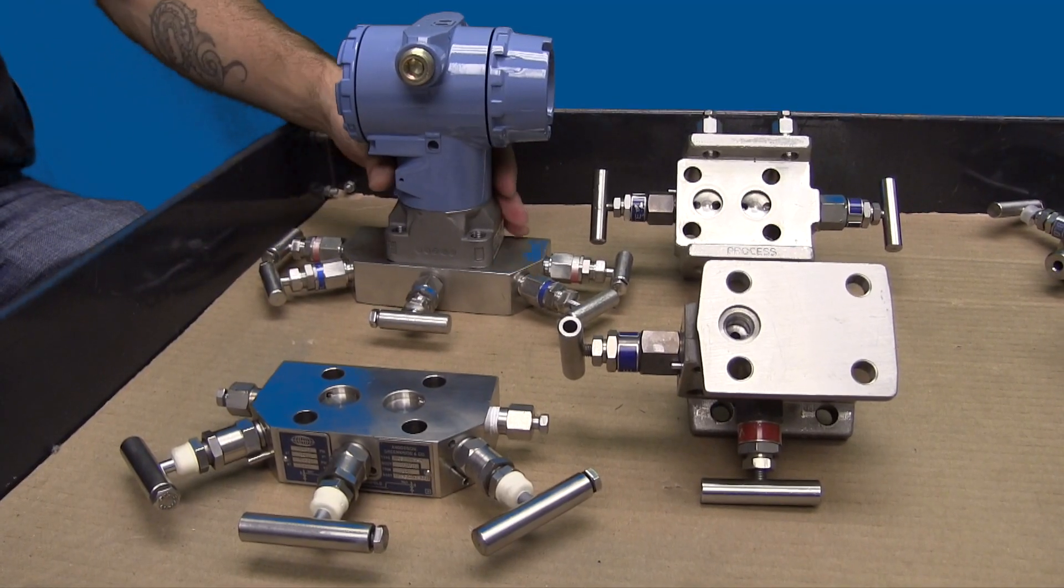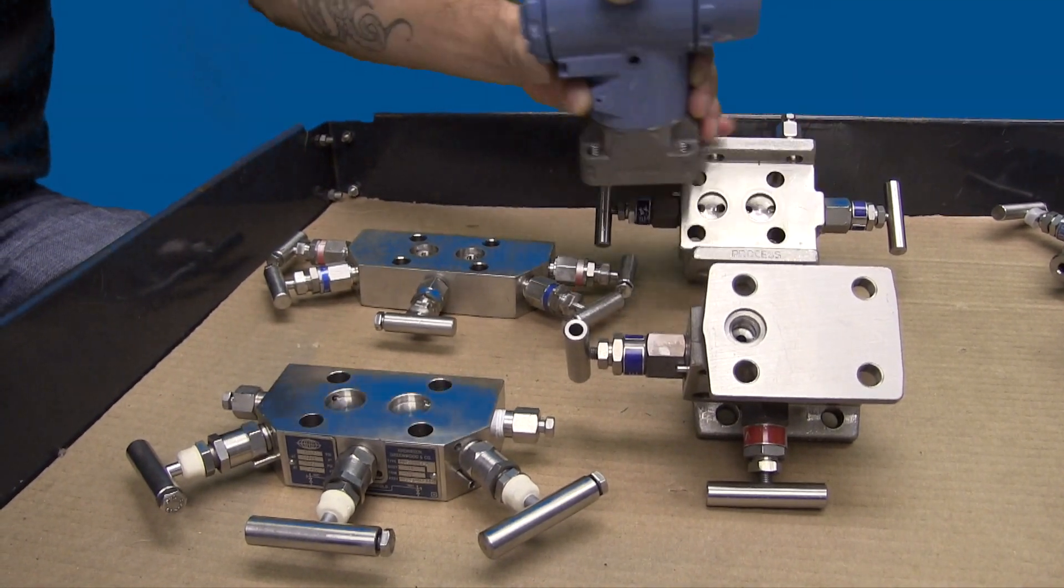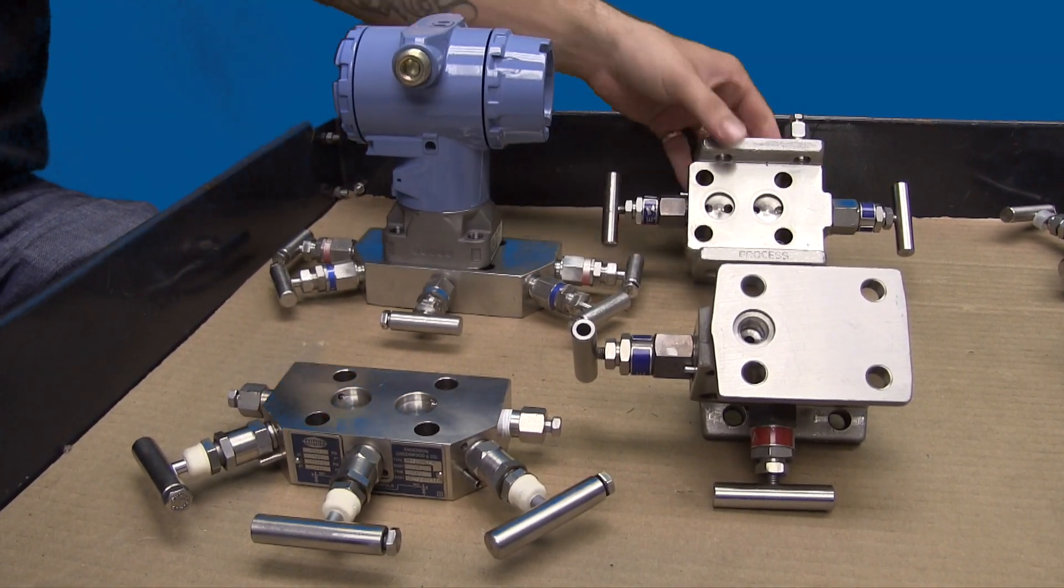Integral manifolds are designed to mount directly to a pressure transmitter with no process flange. There are two types: traditional and coplanar.